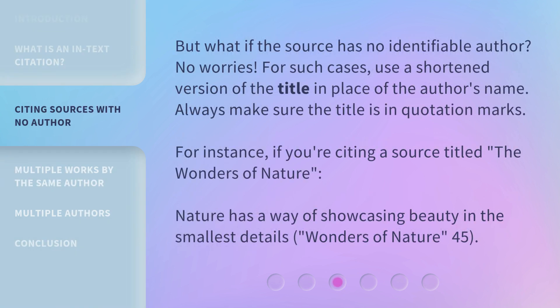But what if the source has no identifiable author? No worries. For such cases, use a shortened version of the title in place of the author's name. Always make sure the title is in quotation marks. For instance, if you're citing a source titled 'The Wonders of Nature': Nature has a way of showcasing beauty in the smallest details ("Wonders of Nature" 45).